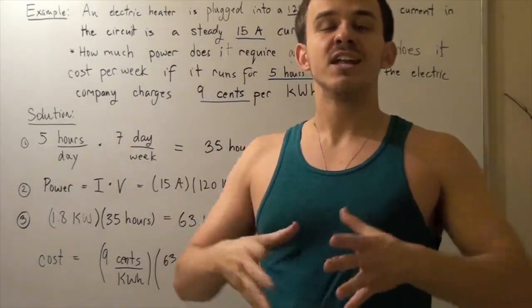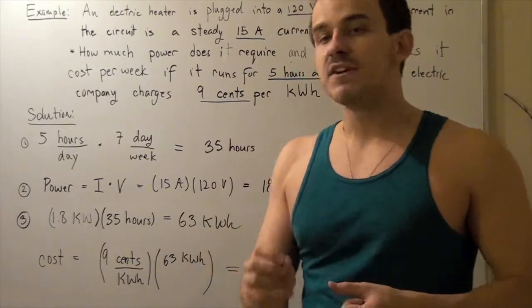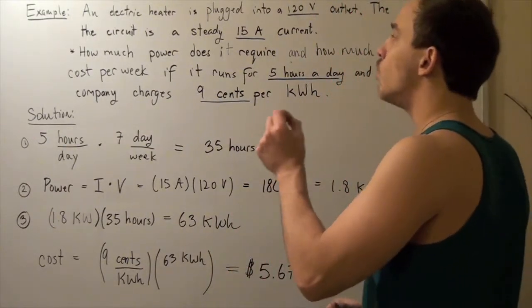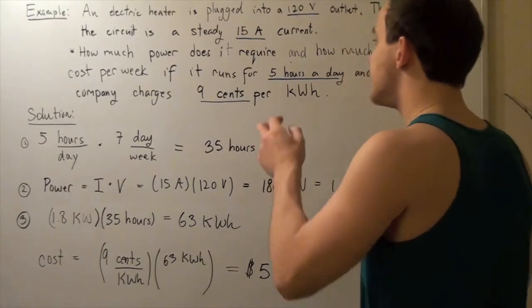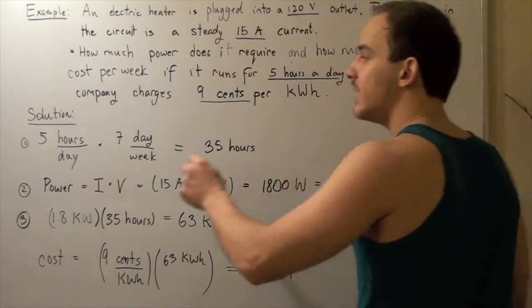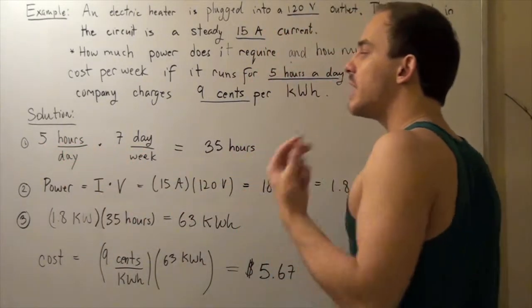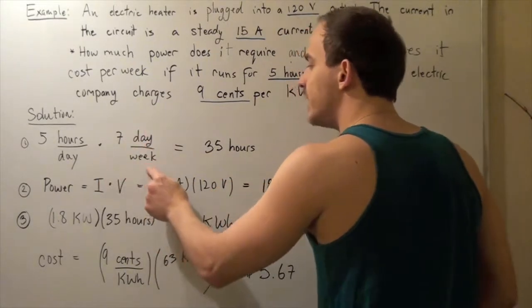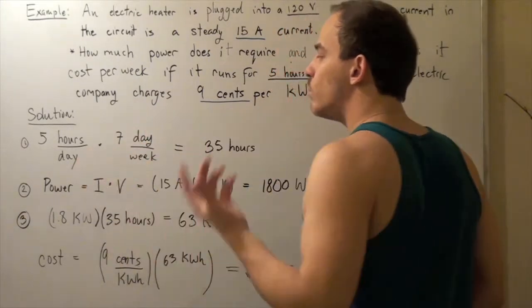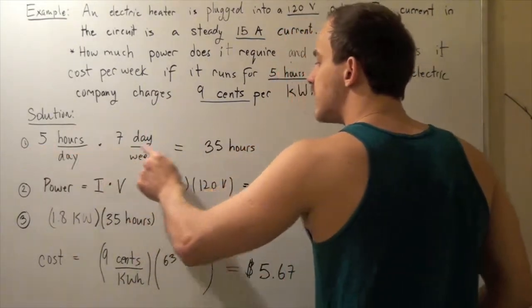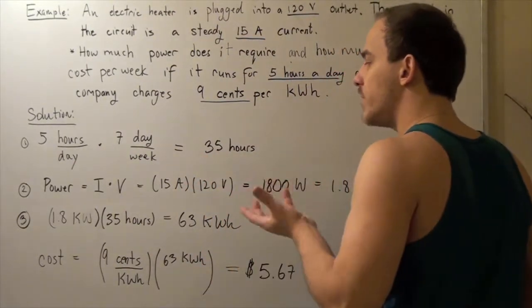To find that, we multiply the hours it runs per day by seven. We take 5 hours per day multiplied by 7 days per week. The days cancel and we get 5 times 7, which equals 35 hours per week.